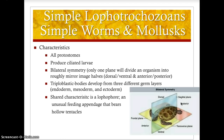They are triploblastic, meaning their bodies have developed from three different germ layers, as discussed in the lecture on introduction to animals. Those germ layers are the endoderm, mesoderm, and ectoderm. If you need to review what those layers do, go back to that lecture or your lecture notes.